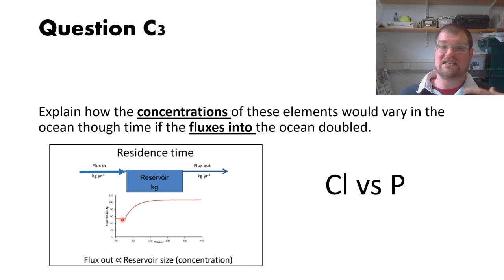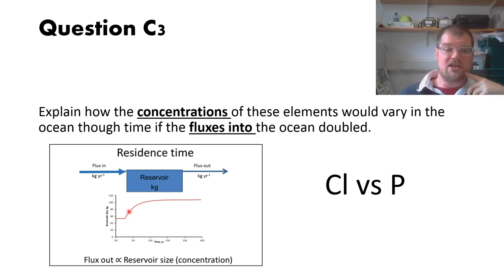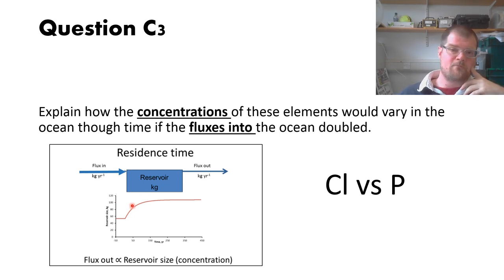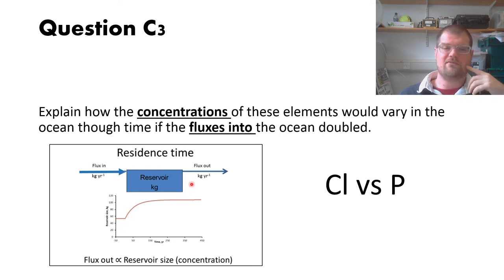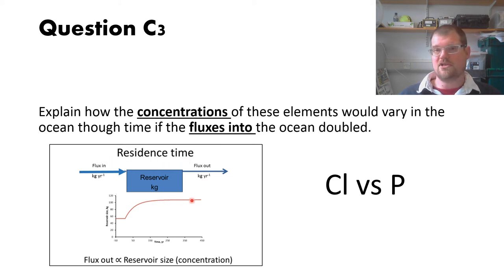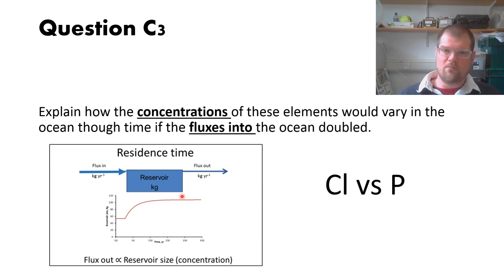Because in almost all situations the flux out is proportional to the concentration of elements in the reservoir, as the concentration increases the flux out will also increase. Eventually flux in equals flux out again and we have a stable situation with no change in concentration — but the overall concentration will have doubled.